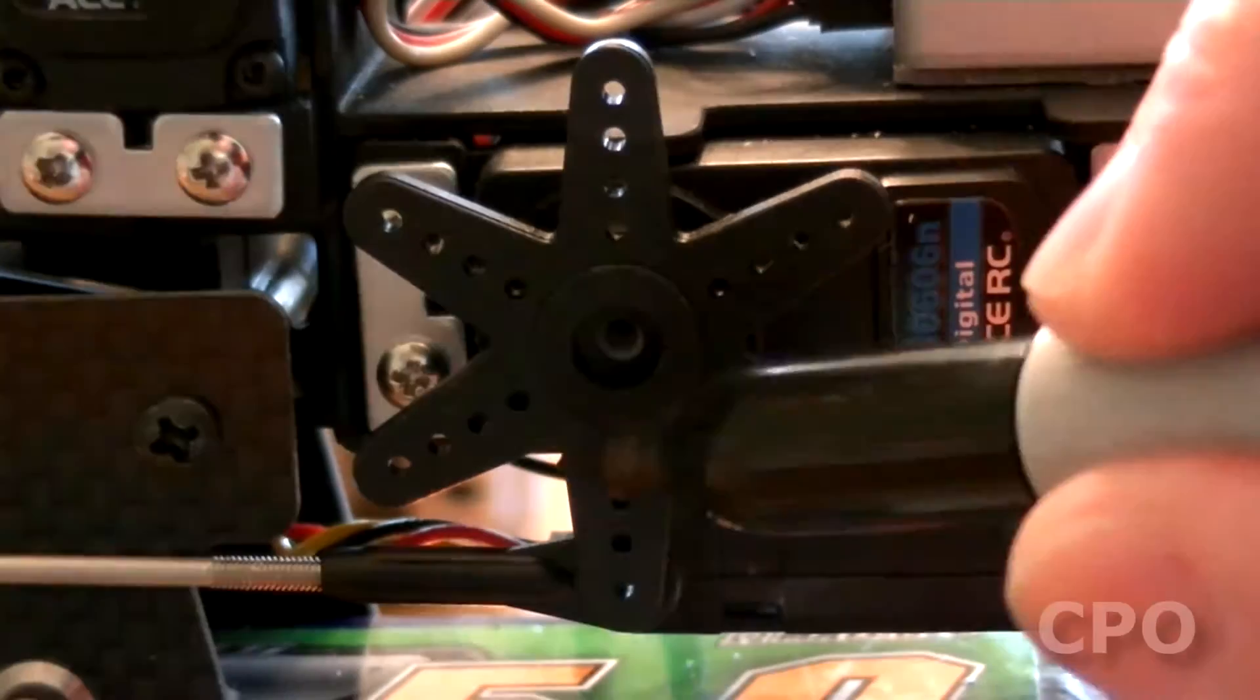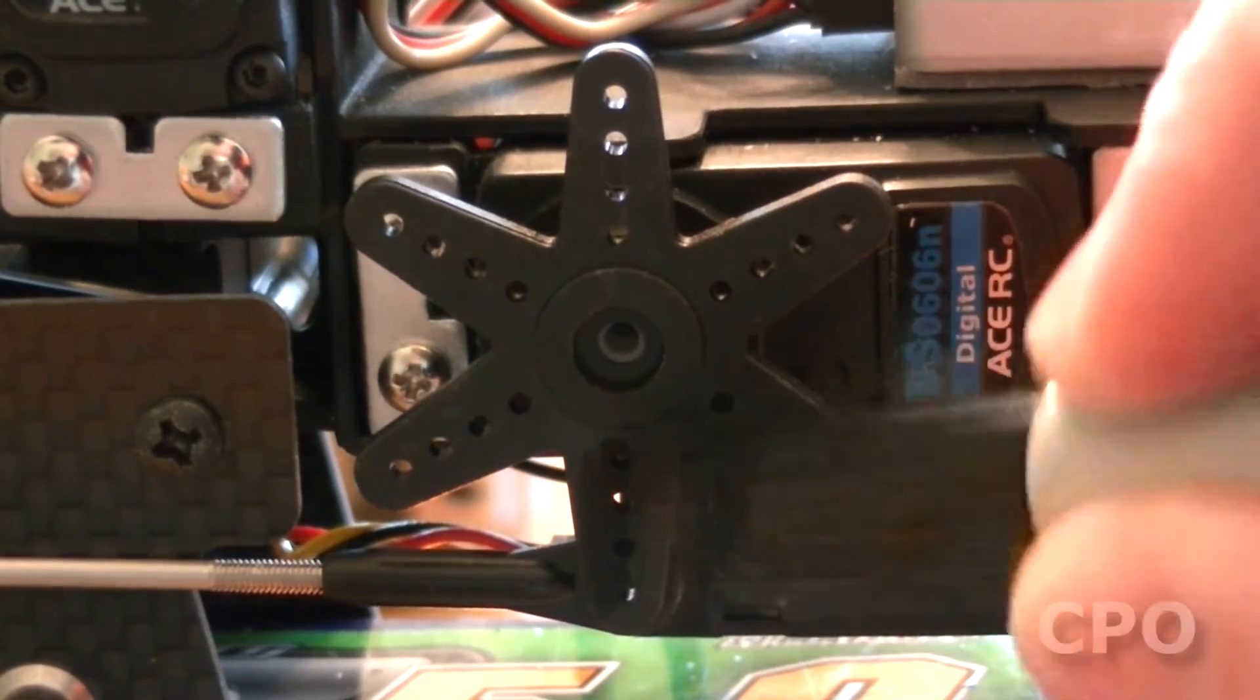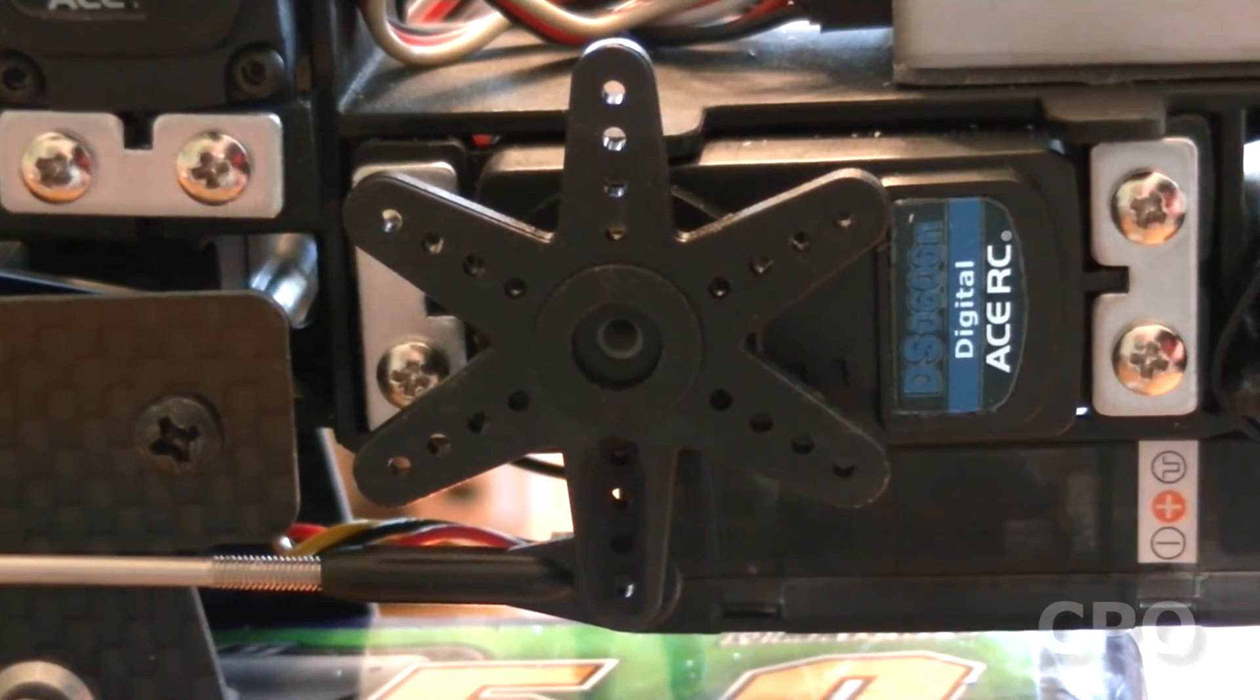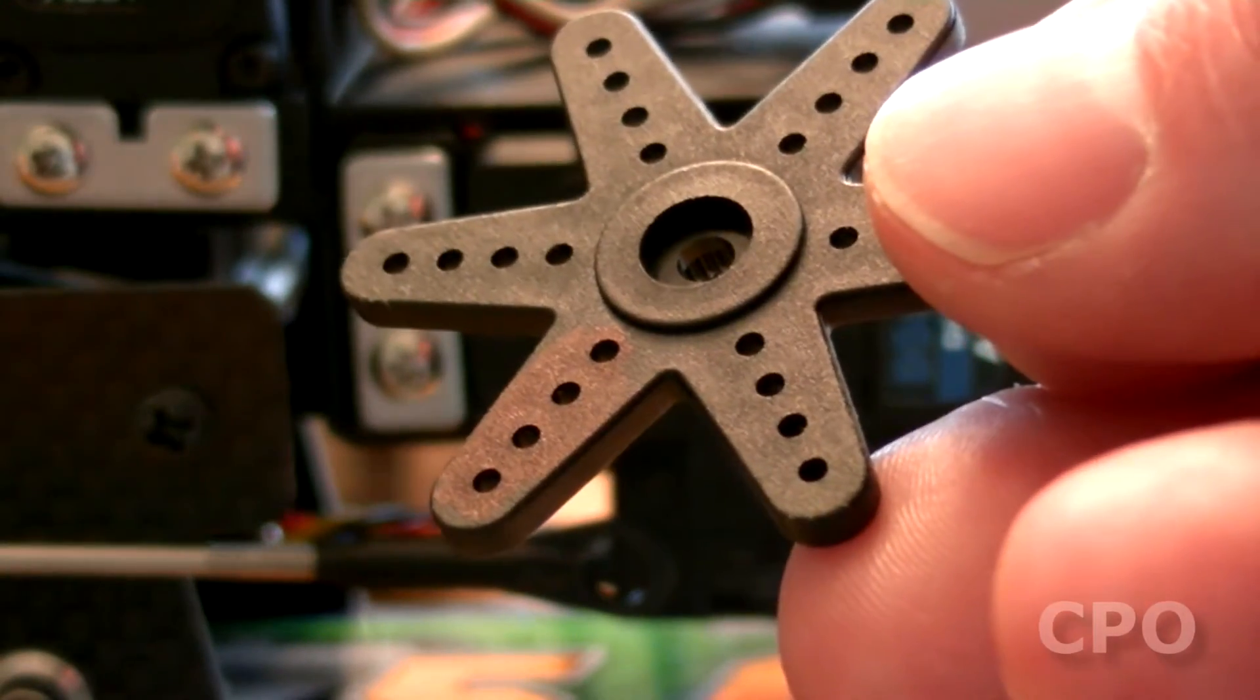So I'm going to go ahead and mark this with a black sharpie, just so when I take it off and install my servo ball, I know which one I'm working on. And of course, this is how it looks with the sharpie on there. It's subtle, but helps me keep track of things.